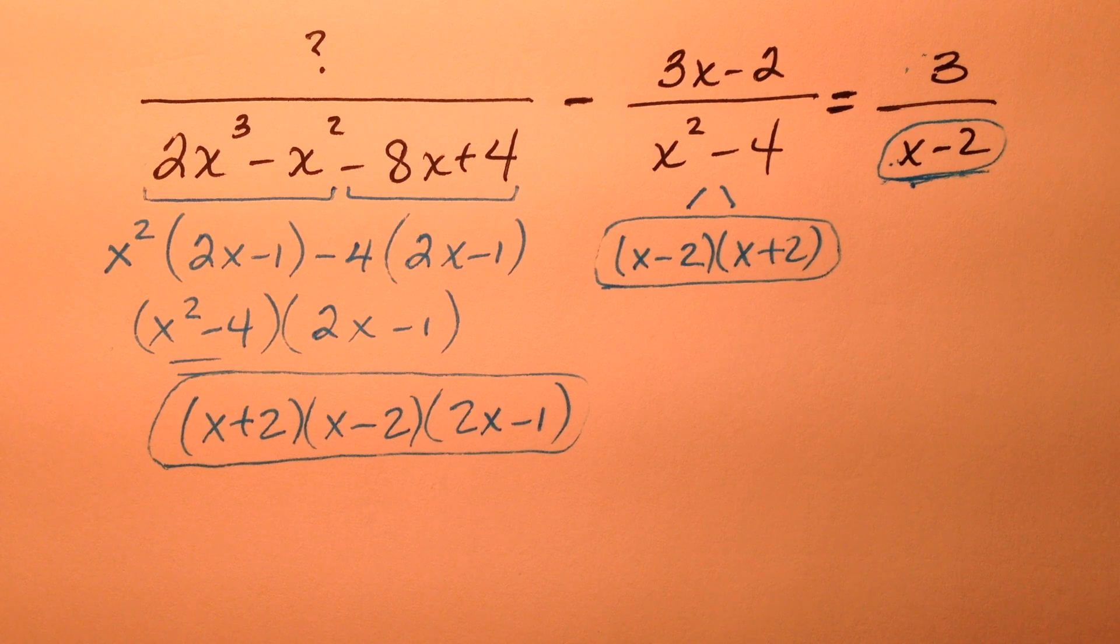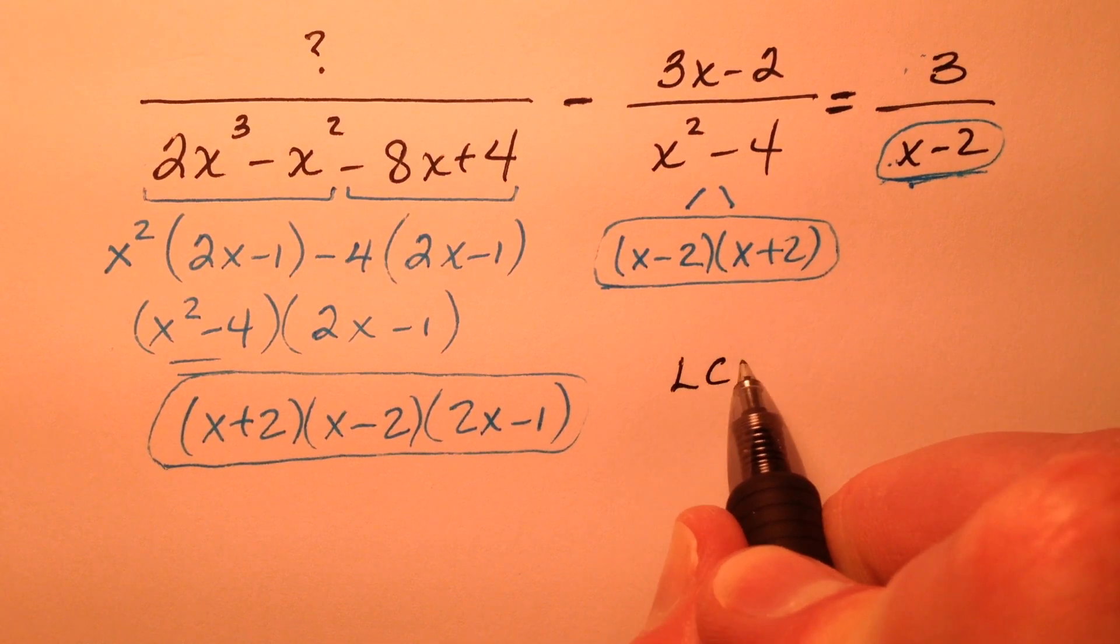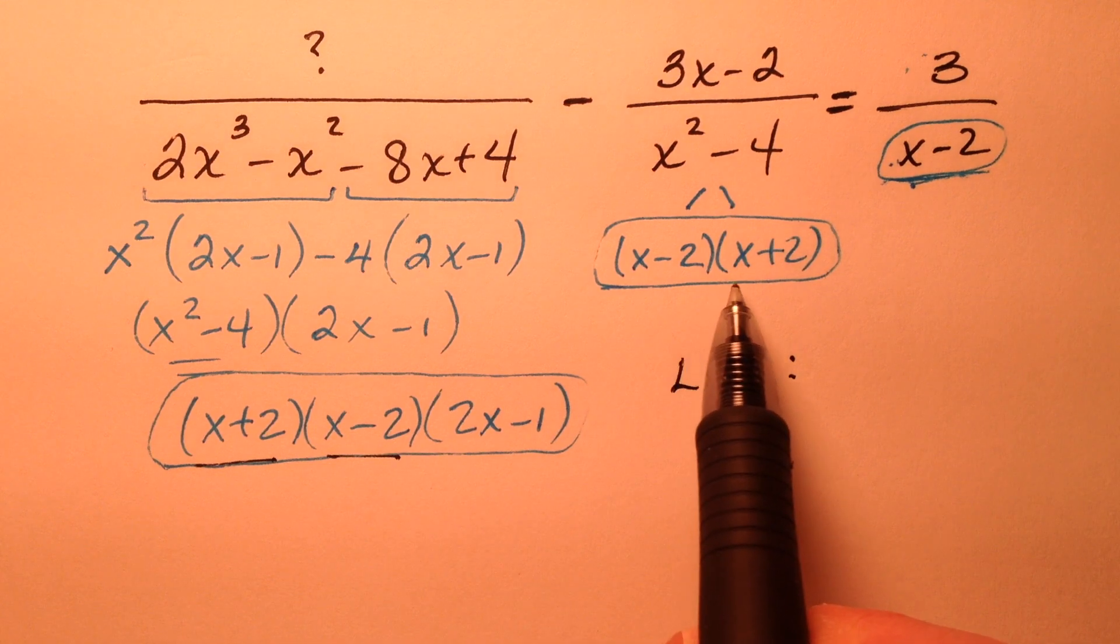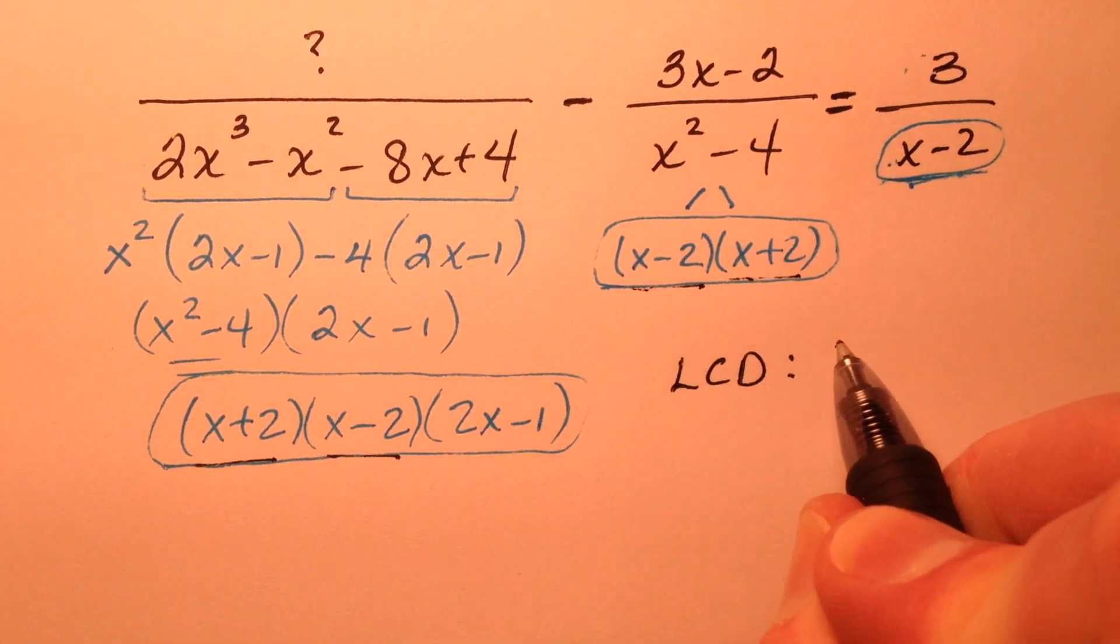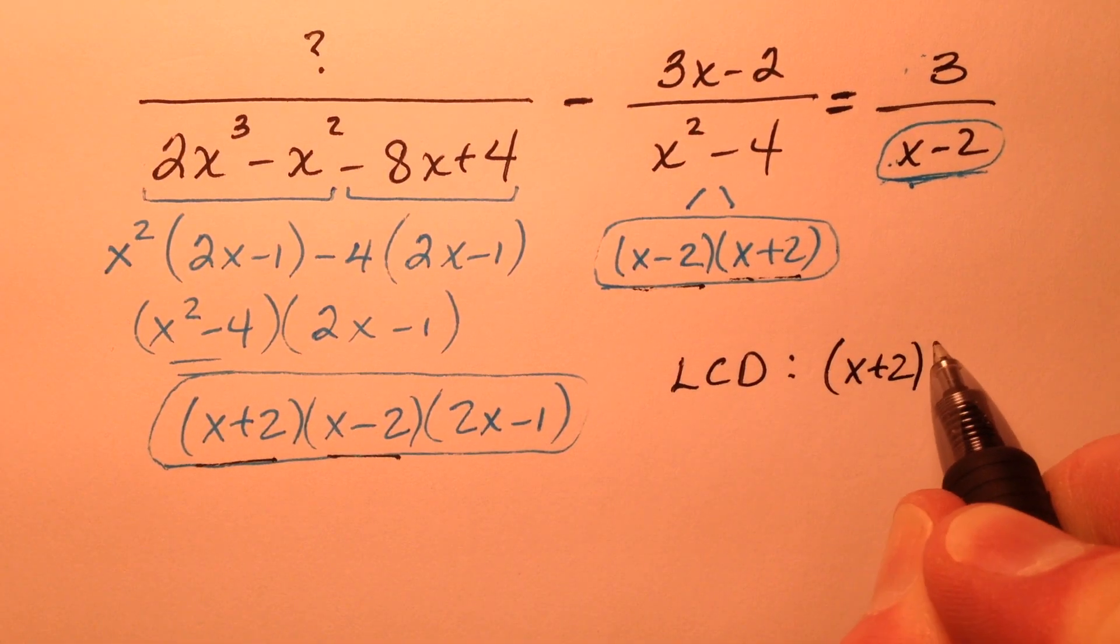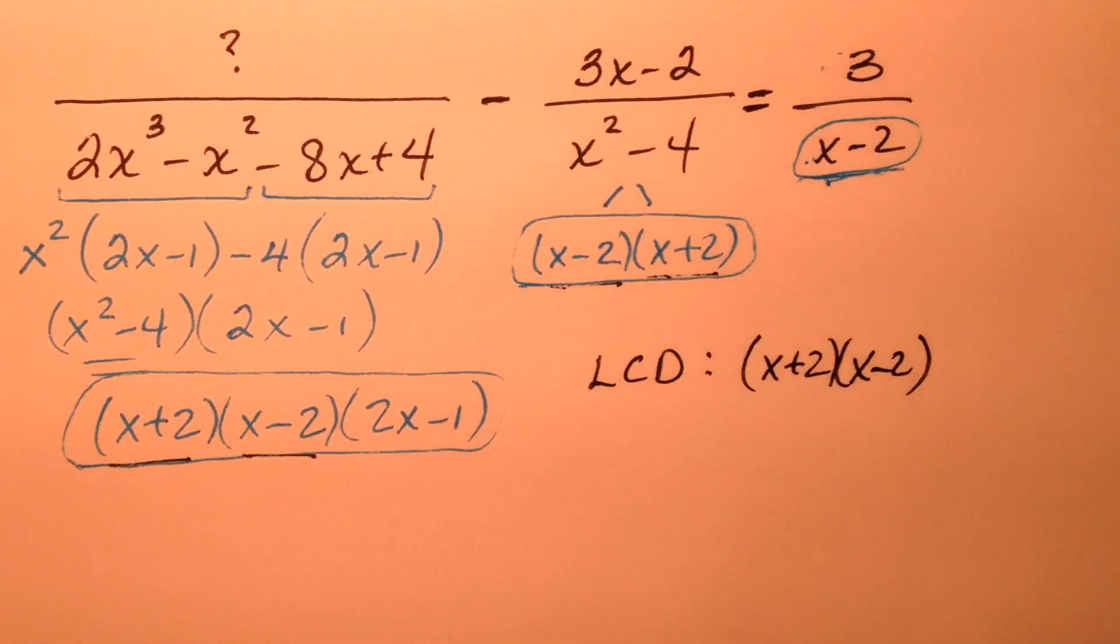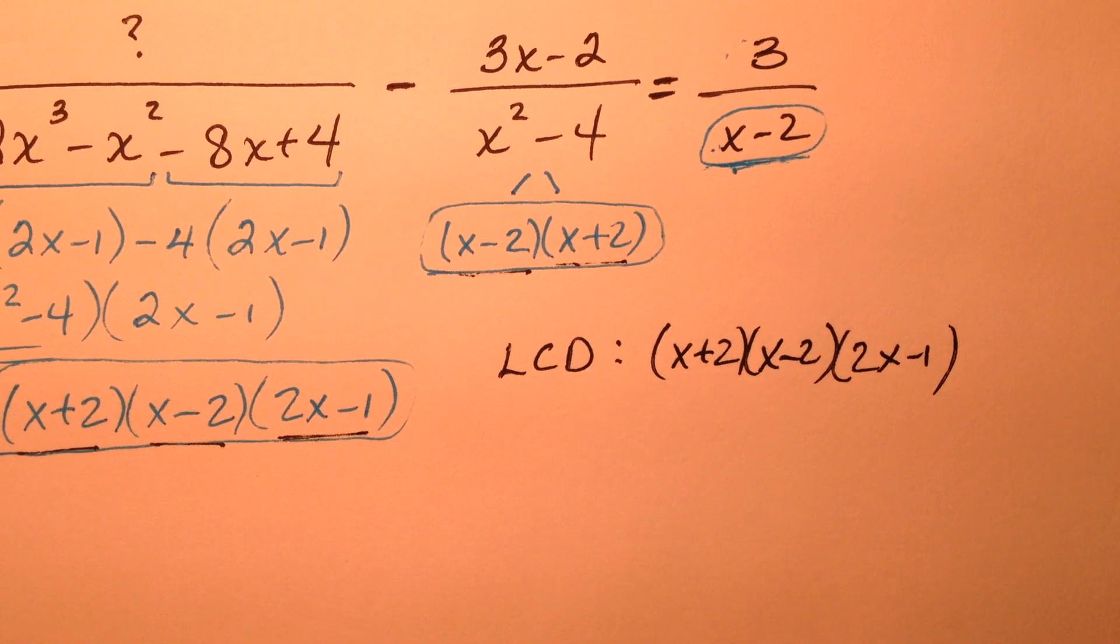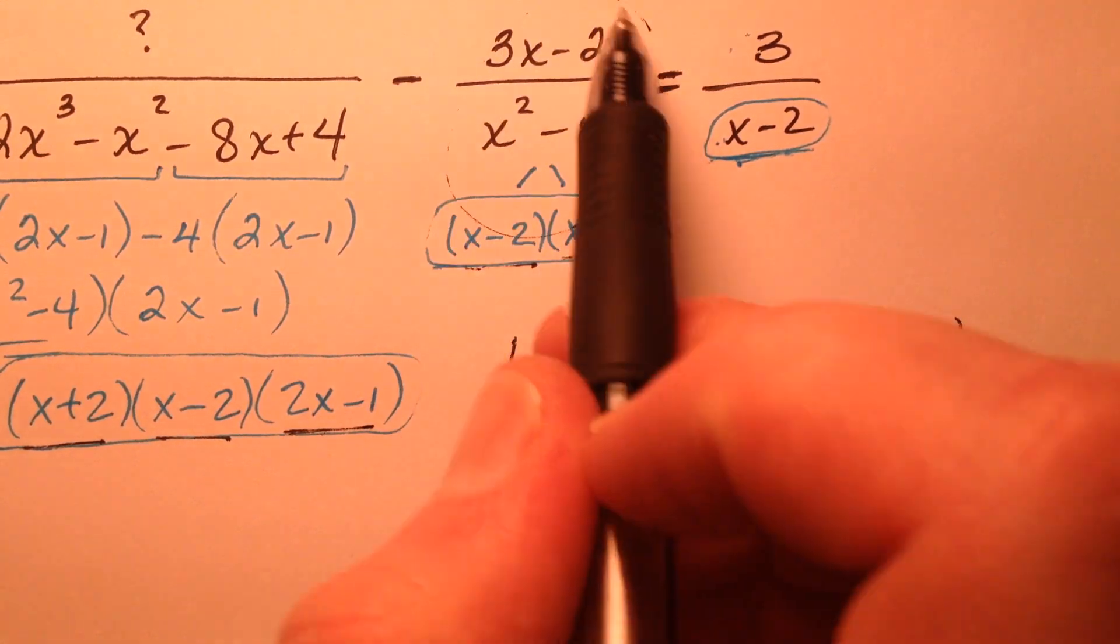So your common denominator here, or your LCD in this situation, we have an x plus 2, x minus 2. So we'll definitely have that. And then it looks like we also have this 2x minus 1 that this guy does not have.